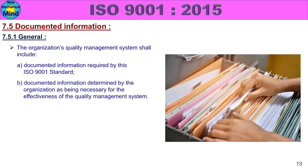7.5 Documented Information. Documented information is determined by the organization as being necessary for the effectiveness of the quality management system. The ISO 9001 standard requires controlled documented information, and every company will maintain internal documented information.